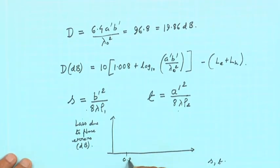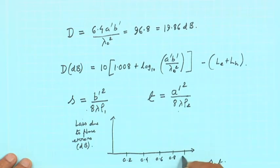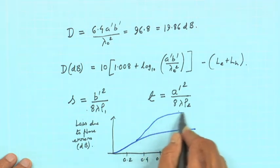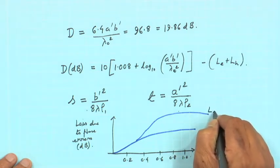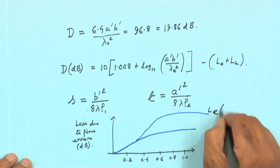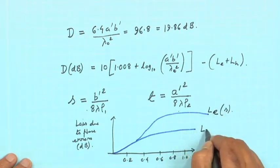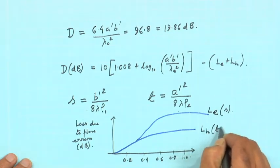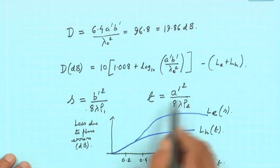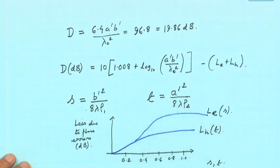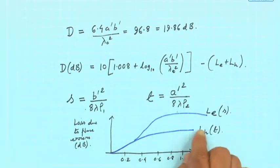There are graphs available that give loss due to phase errors in dB versus the variables S or t. Values go from 0.2, 0.4, 0.6, 0.8, 0.1. This is L_E as a function of S, and L_H as a function of t. If A' and B' are known, S and t can be calculated, and from the graphs you can find out the losses.